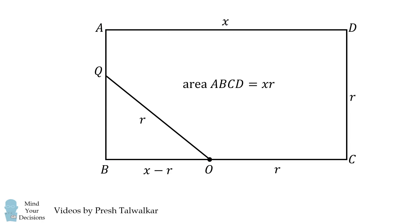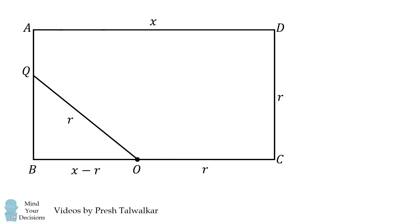We'll now consider that the area of the rectangle will be one side multiplied by its other side, so it will be equal to X times R. We want to figure out X times R and this is how we'll do it. We'll consider the right triangle OBQ.